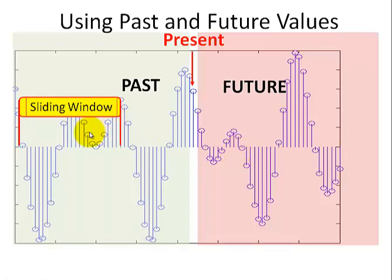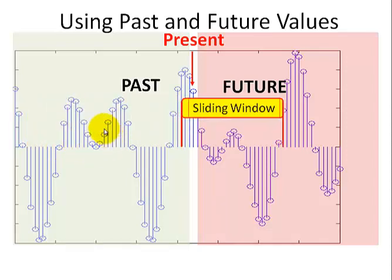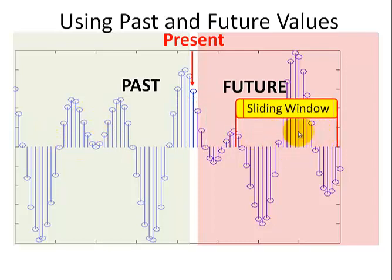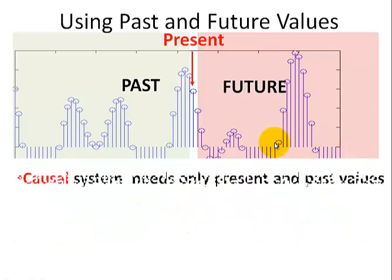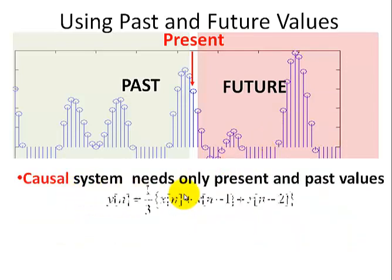The previous example from the earlier video was a sliding window or moving average filter where we take these values and slide it along, calculating a set of values based on the input to get our output signal. This is a causal system that requires only the present and past values. Here's an example where we take the average of three input values — the present value and the past two values.